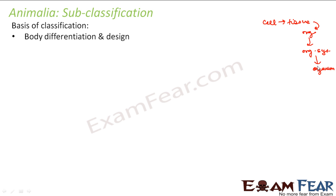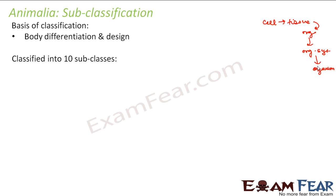It is not necessary that in all organisms in the Animalia group, organ systems will be present. There are animals that exist only at the cellular level with no tissues, and there are animals where there are tissues but no organs. So depending upon that, we have classified them into 10 subclasses — because it is such a diverse group.